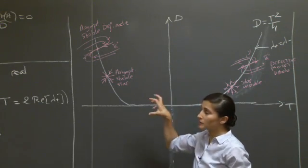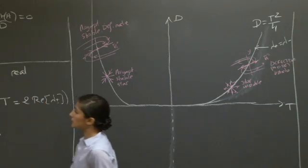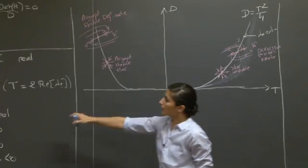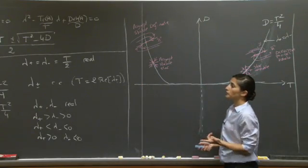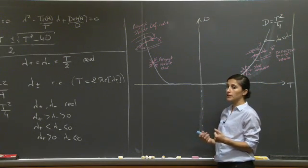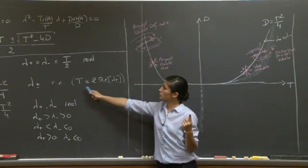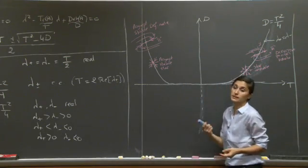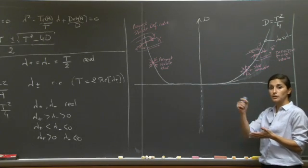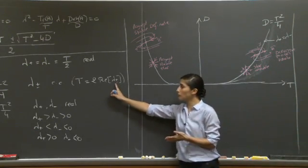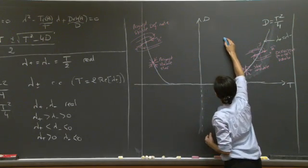Now let's look at points above the parabola, where d > t²/4. Here we have complex conjugate eigenvalues. The real part of the eigenvalue is determined by the trace, and the solutions involve exponentials multiplied by cosines and sines. This gives rotation in phase space, but the distance to the critical point either grows or decays — yielding spiral trajectories.